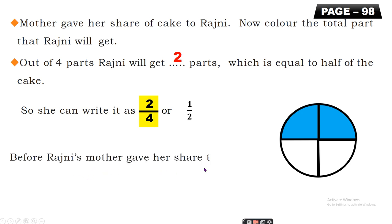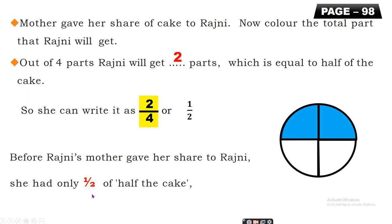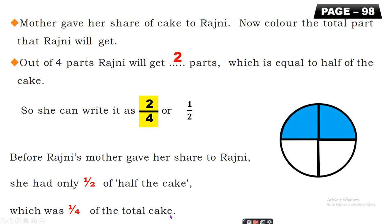Before Rajni's mother gave her share to Rajni, she had only half of half the cake. Before her mother gave her share, Rajni had only one-fourth. That means she had half of half — half of the cake's half. So she had only half of half the cake, which was one-fourth — a quarter part.